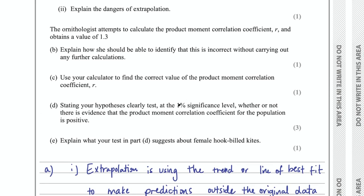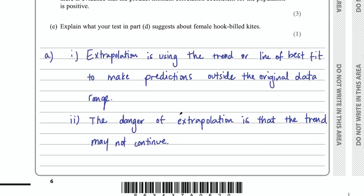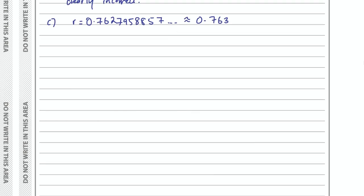Part D says, stating your hypothesis clearly, test at the 1% significance level whether there is evidence that the product moment correlation coefficient for the population is positive. You'll need to set up your hypothesis test and use your formula booklet. We have R of 0.763 and alpha of 1% or 0.01. The null hypothesis assumes no correlation — rho equals 0. That's pretty much always the null hypothesis when testing the correlation coefficient.